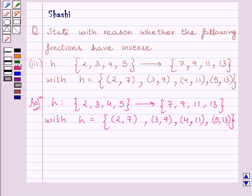Now, let me see. H(2) = 7, H(3) = 9, H(4) = 11, and H(5) = 13.